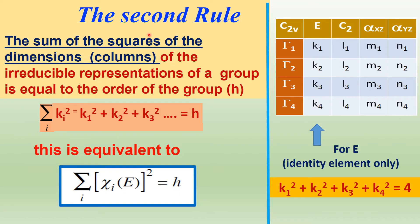According to the second rule, the columns are taken. In the third rule, rows are taken. In the fourth rule, multiplication of two rows is considered.